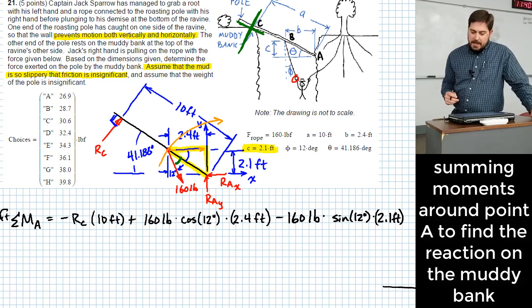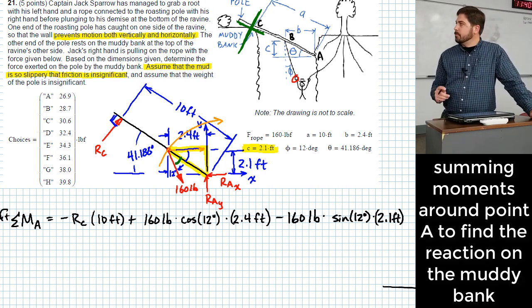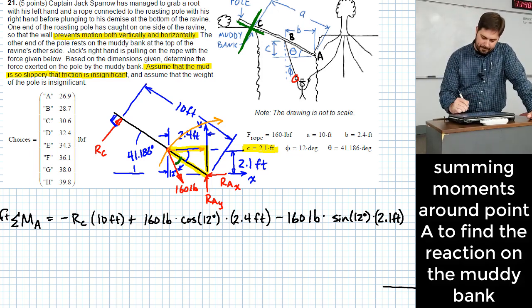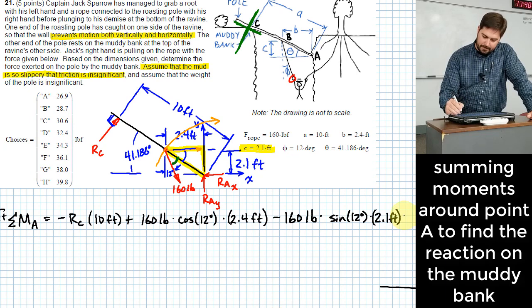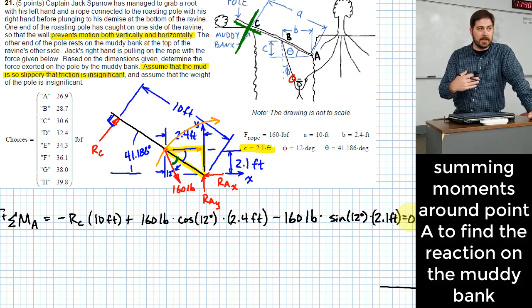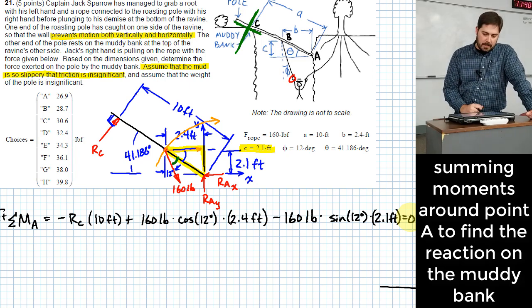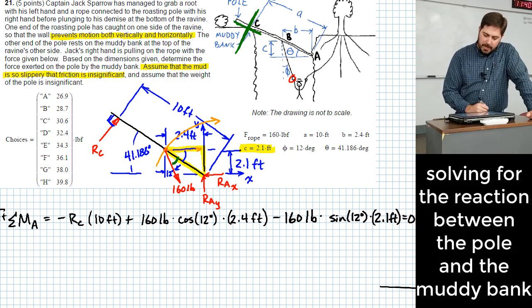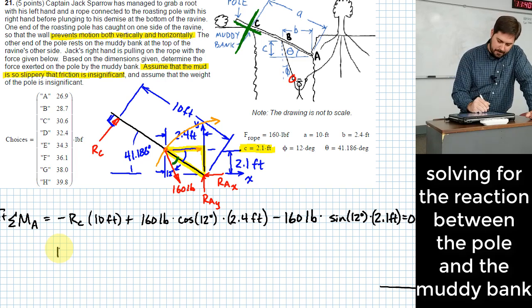So we basically take the horizontal component and multiply it by the vertical length distance, which is 2.1 feet. Do I have anything else I need to think about as far as moments around point A? I think that's it. We're neglecting self-weight, so we didn't put that on the free body diagram. And so we're going to call it good there. So now what? You can just get RC by itself.